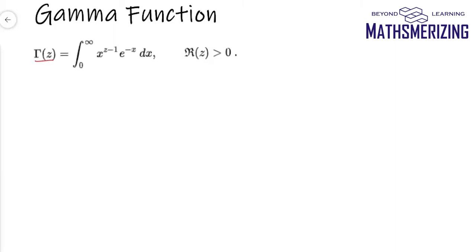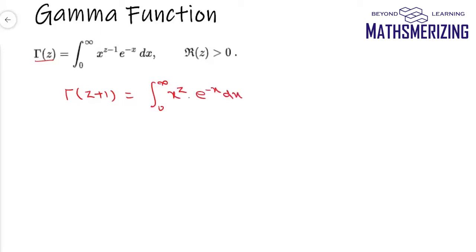Suppose I have a gamma function defined as gamma(z+1). I can write it as the integral from 0 to infinity, and in place of z I'll write z+1, so I can write it as x to the power z into e to the power minus x dx.